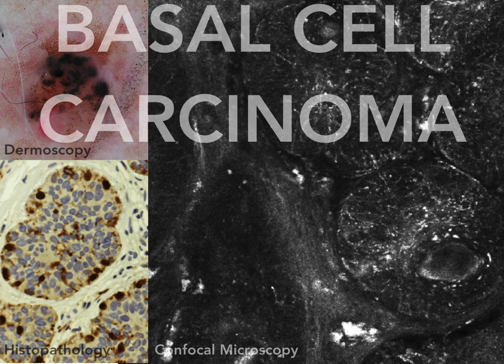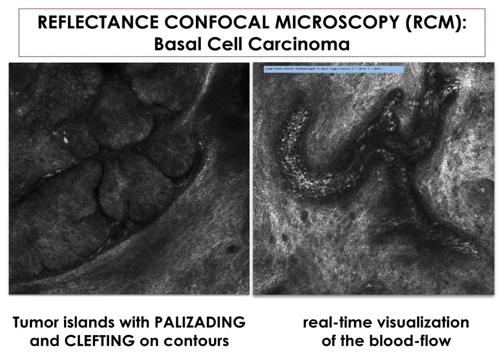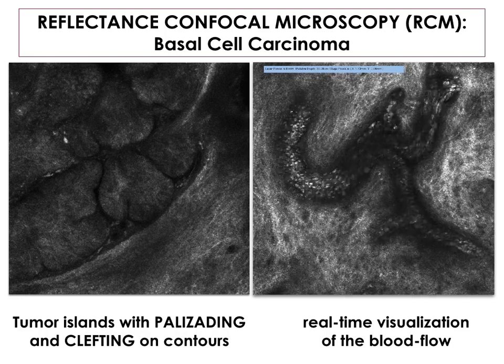Concerning basal cell carcinoma, confocal microscopy is able to show tumor islands characterized by peripheral clefts. In this image, tumor islands are easily detectable, characterized by palisading and the peripheral cleft. Also, enlarged blood vessels can be visible, especially during live imaging with blood flowing inside.